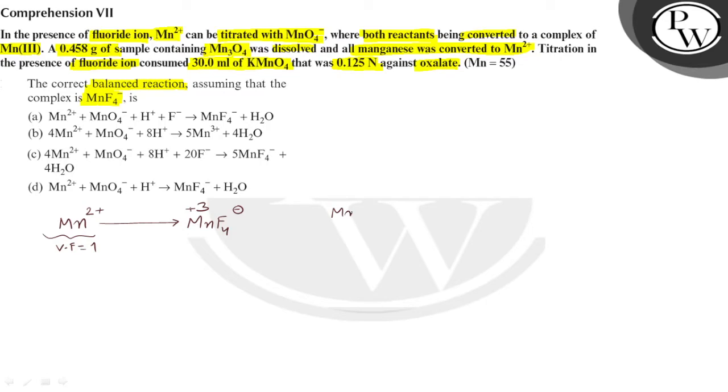Permanganate ion is also getting comproportionated to MnF4 minus. So manganese is turning from +7 state to +3 state. So its valency factor is 4.